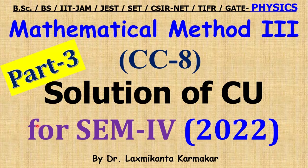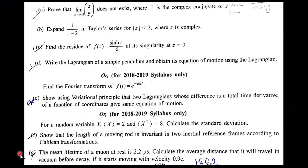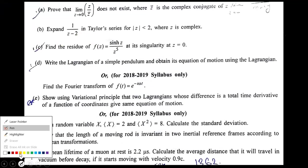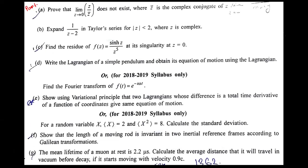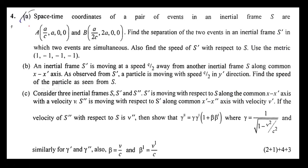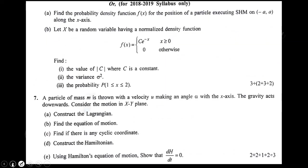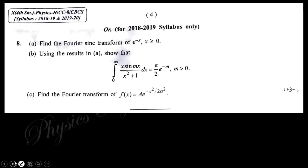Hello, welcome everyone. This is Part 3 for the solution of Calcutta University question paper for Semester 4, paper CC8, Mathematical Methods 3, year 2022. In Part 1 we discussed question number one, in Part 2 we discussed questions two and three. In this session, Part 3, we will discuss question number four and five, and the upcoming session will continue with questions six, seven, and eight. If you want to watch the previous lectures, links are given in the description box.